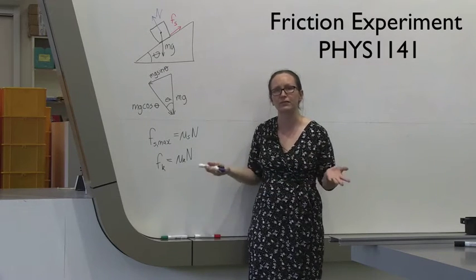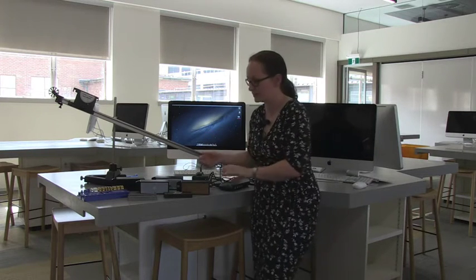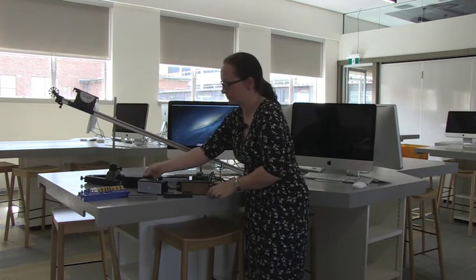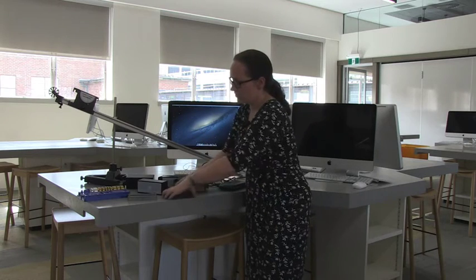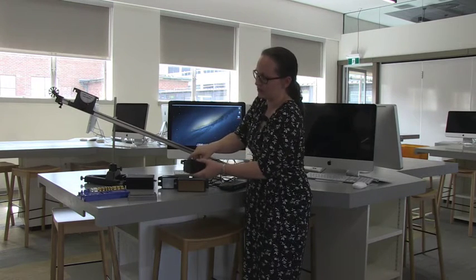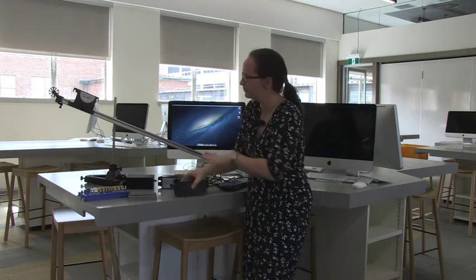This is the equipment that you're going to have available to you for the experiment. You've got two boxes with plastic bottoms, a box with a felt bottom, a box with a cork bottom. You've got masses which will fit inside these boxes. So you may want to put them in the box before putting the box on the track. You've got the track with a retort stand, which allows you to adjust and change the angle of the track.